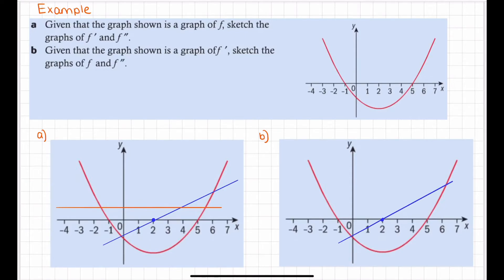Now we want to sketch the original function — this is where we have to think slightly differently. In the original function, we need to know where the maxima and minima are. Remember: when the first derivative equals zero, that's where the maxima and minima are. In this graph, the x-intercepts are at negative one and five. Because we're treating this as a derivative, those must be where the maxima and minima were. We need to look at the graph around each point to determine which is which.